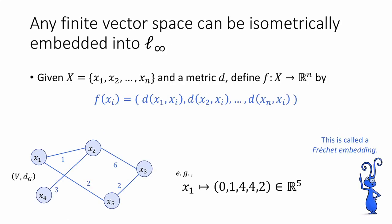Okay, so when can we do this beyond that simple example? Well, the good news is that any finite metric space can be isometrically embedded into L∞. So here's how we can do that. Suppose we have a set X with n points. So X is {x₁, x₂, ..., xₙ}. And suppose we have some metric d on these n points.